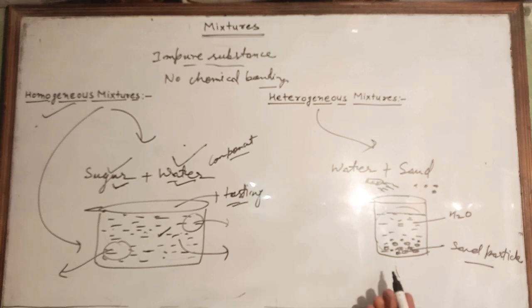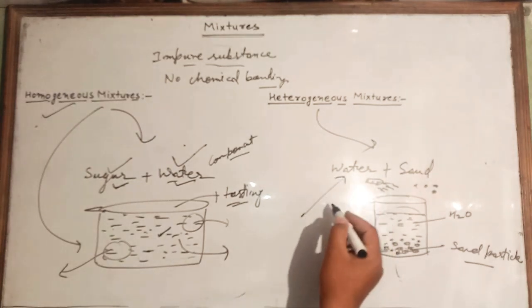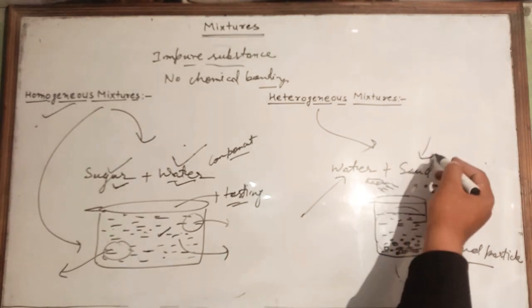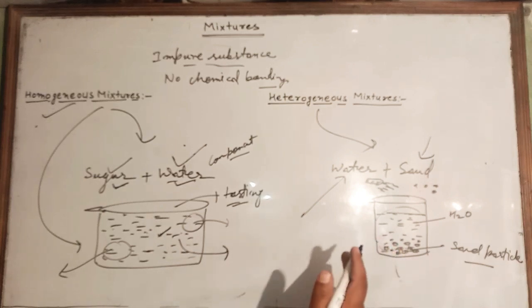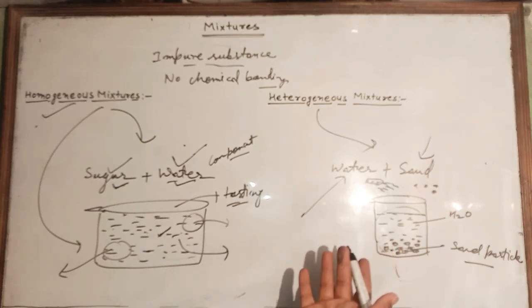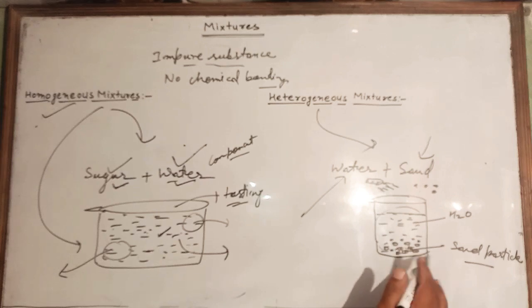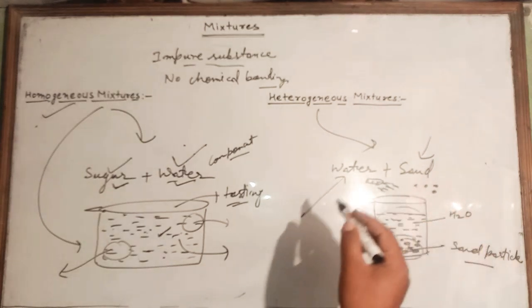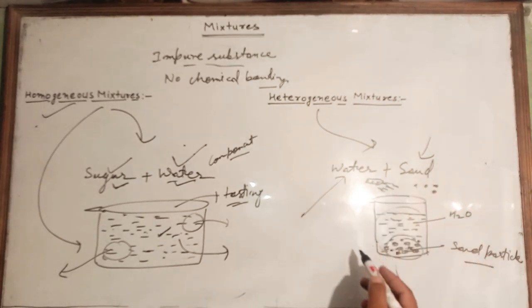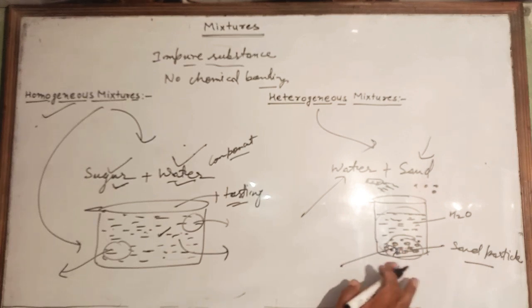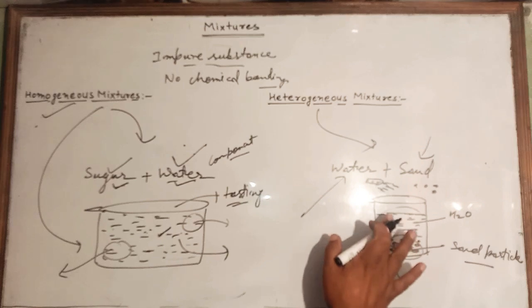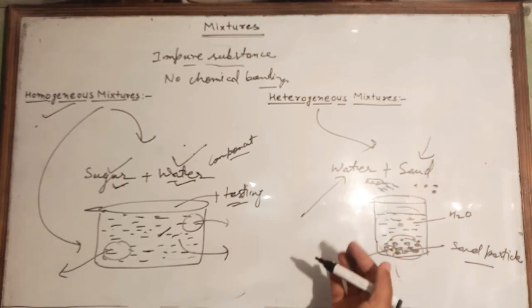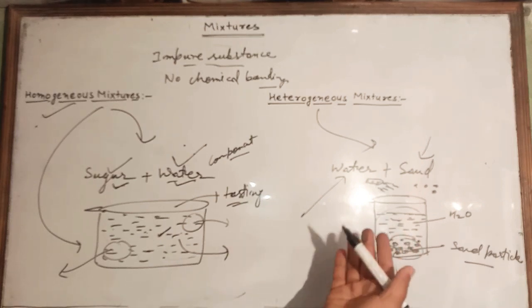In a heterogeneous mixture, the components — such as water and sand — are not uniformly distributed throughout the volume. You can see that the density of particles is higher in some places and lower in others. The constituents can be easily recognized separately, like sand at the bottom and water above. That type of mixture is called a heterogeneous mixture.